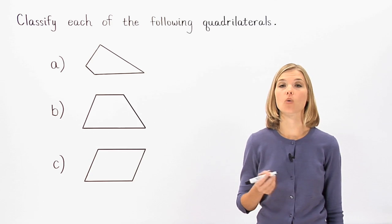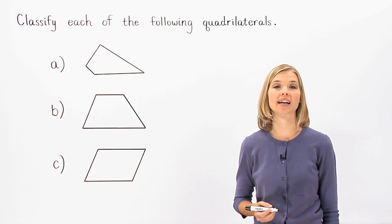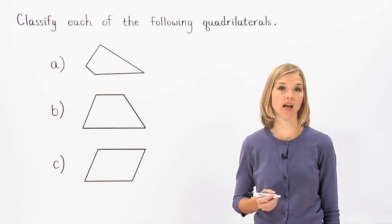The first way to classify a quadrilateral is to determine if it has any pairs of parallel sides.